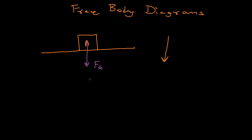The block is being pulled by gravity in the downward direction, but the block is still not moving. So there must be an opposite force countering the gravitational force, and that force is provided by the table — the table is pushing the block upward. That force is the normal force, denoted by N, and since it acts on block A, we call it N_A.